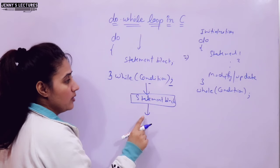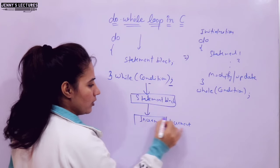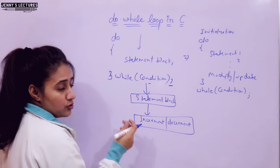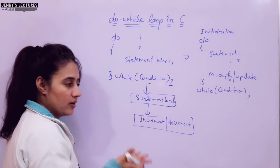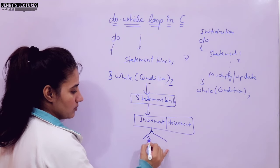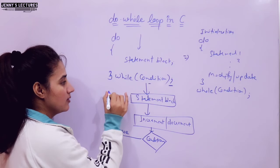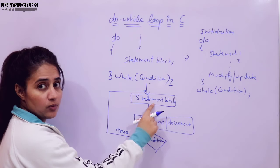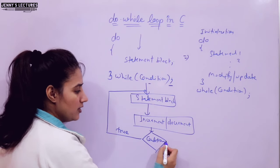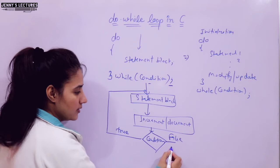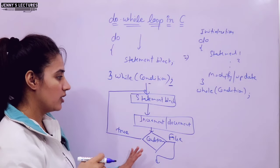If you draw a flowchart: first, the statement block would be executed. After that, modify or update — increment or decrement — depending on the requirement. For example, if you want to print numbers from 1 to 100, it would be increment; from 100 to 1, it would be decrement. After that, condition is checked. If true, control goes back to the statement block again. If false, control goes out of the loop.